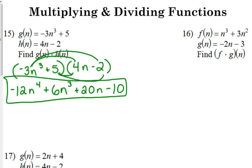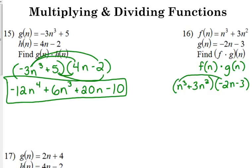16 is the same thing, it's just a different notation. I encourage you to rewrite it like this: f of n times g of n. That's really what that's talking about. So we take our f function, put it in parentheses, times our g function, put it in parentheses. FOIL it out, or if you prefer to use the box, or whatever method you use, go with it.